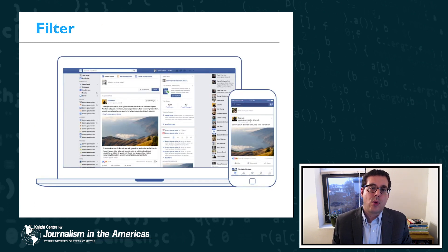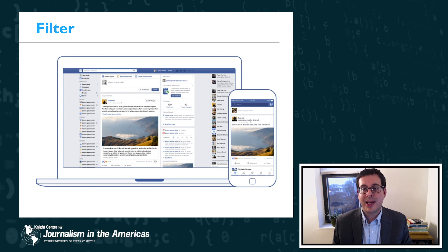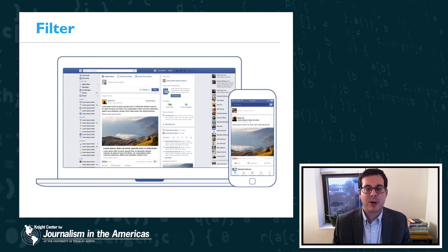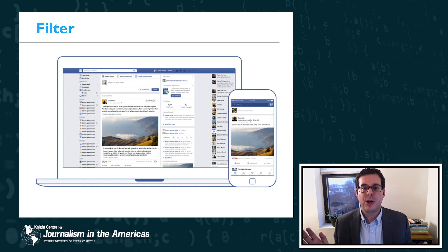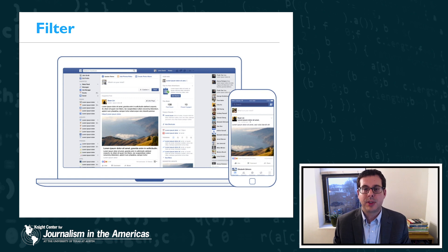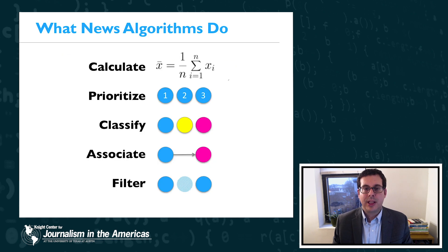Finally, algorithms can be used for filtering information. Filtering is very important because of information overload — deciding whether to show or hide something can be very powerful. The Facebook newsfeed is a perfect example of a filtering algorithm: it determines, of all the posts it could show you, which ones it's actually going to show you when you log in. So again, news algorithms calculate, prioritize, classify, associate, and filter. That's what algorithms are good at.